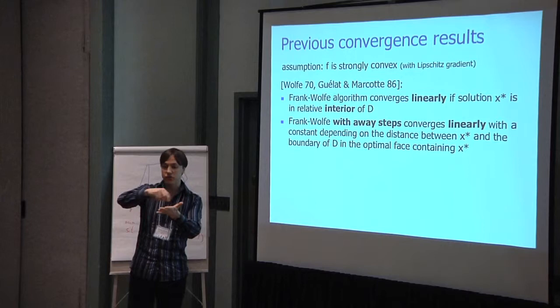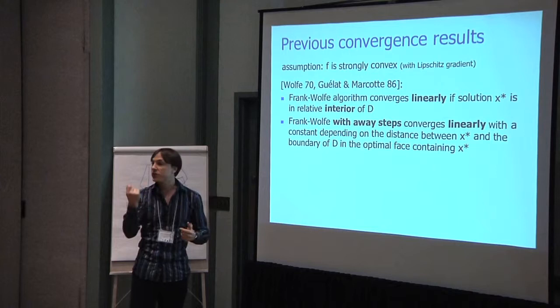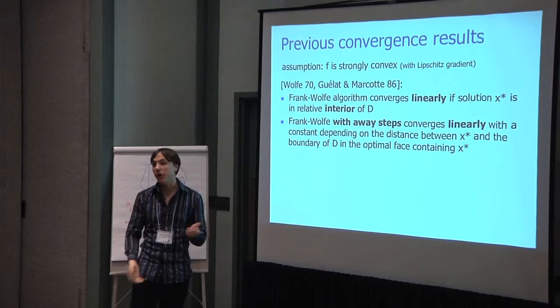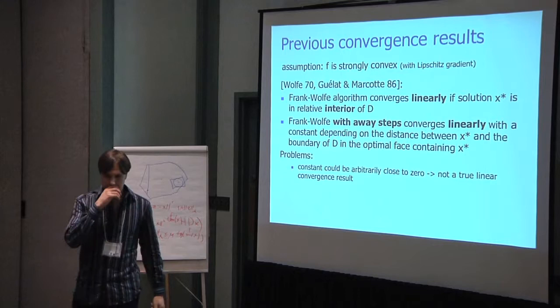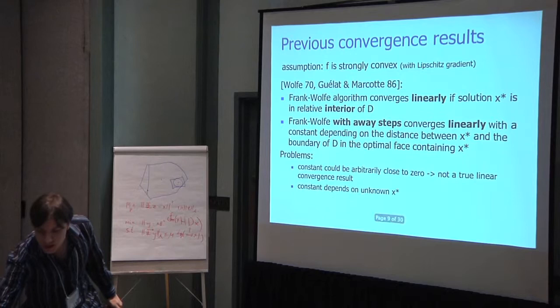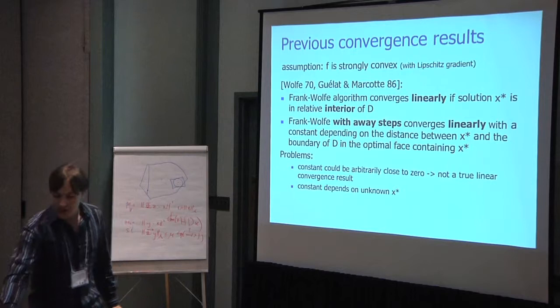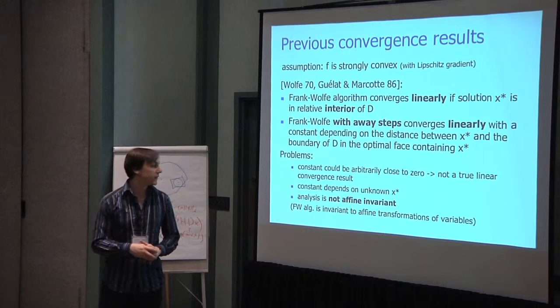The analysis that Guélat and Marcotte presented reused the results from standard Frank-Wolfe. What happens is you will get that the constant and the rate of convergence will depend on the distance between the solution and the boundary in the optimal face. The away steps help you to identify the optimal face. Once you're in the optimal face, you just do standard Frank-Wolfe and then you get the standard linear convergence rate. But the problem is, again, this constant could be arbitrarily close to zero. In particular, if your solution is at the corner, this analysis would tell you that there is no linear convergence rate.